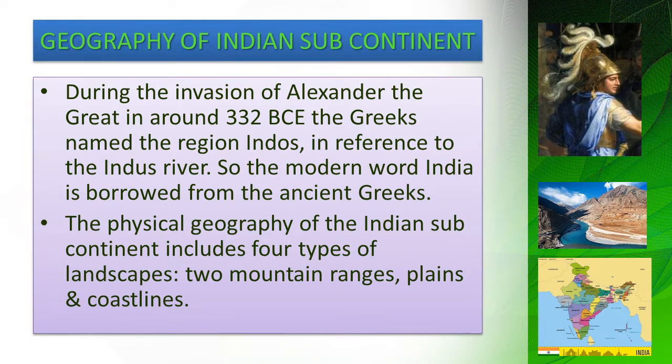Now here we have the geography of the Indian subcontinent. During the invasion of Alexander the Great in around 332 BCE — that is before the birth of Christ — the Greeks named the region as 'Endos' in reference to the Indus River. This is how the modern word 'India' is borrowed from the ancient Greeks. The physical geography of the Indian subcontinent includes four types of landscapes: two major mountain ranges, the vast extensive plains, and the huge coastline in the southern region.